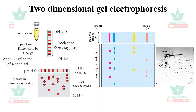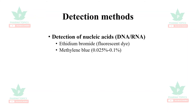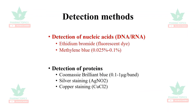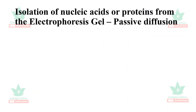For detection of nucleic acids such as DNA or RNA, two dyes are used: ethidium bromide, which is a fluorescent dye, and methylene blue. For detection of proteins, Coomassie Brilliant Blue, silver staining, or copper staining are the dyes used.